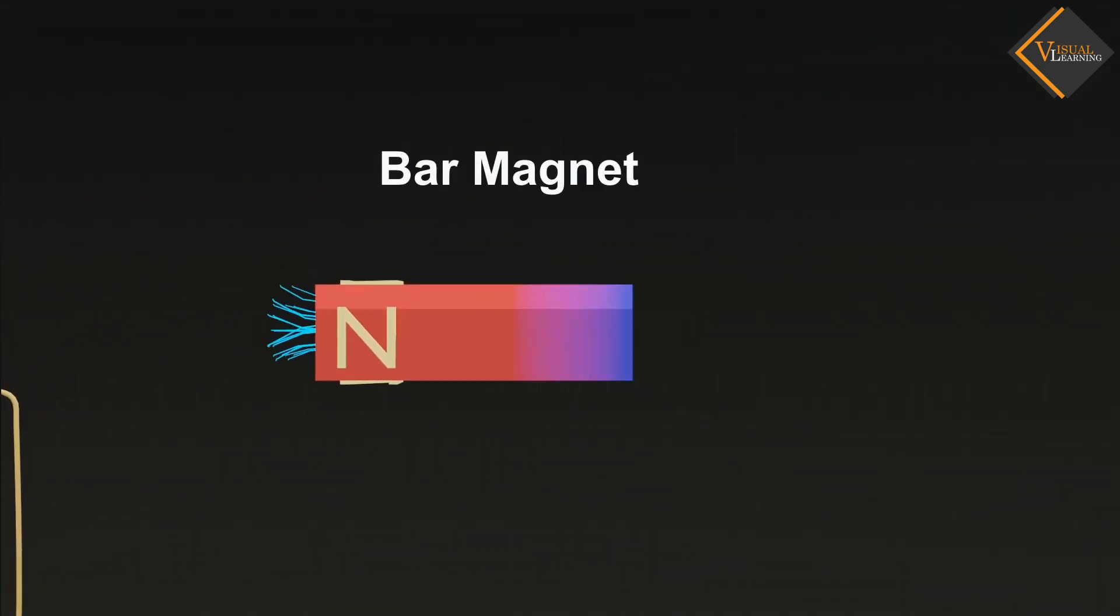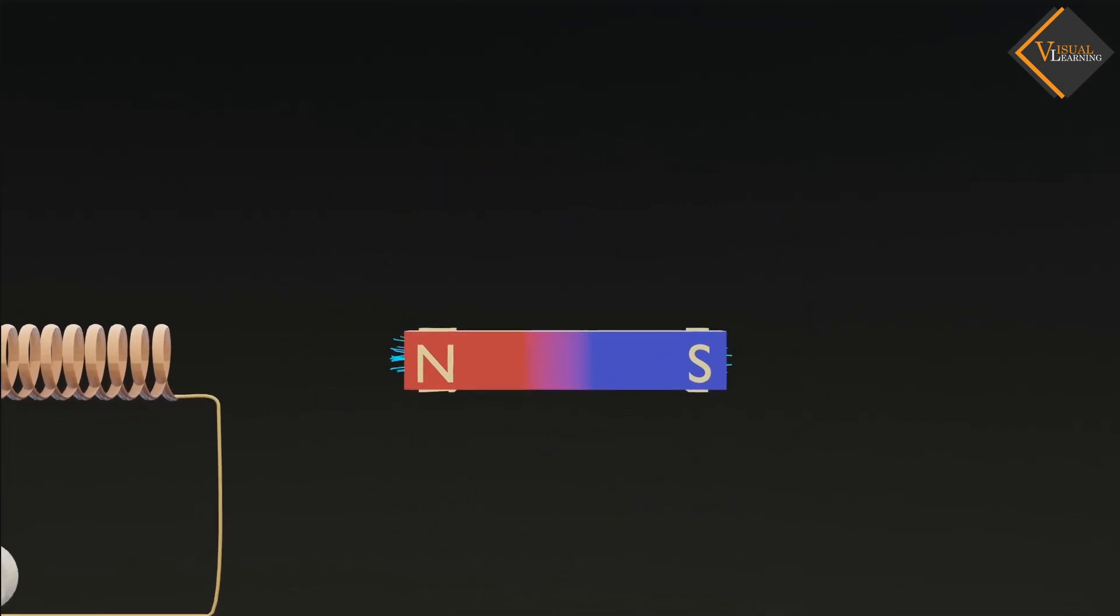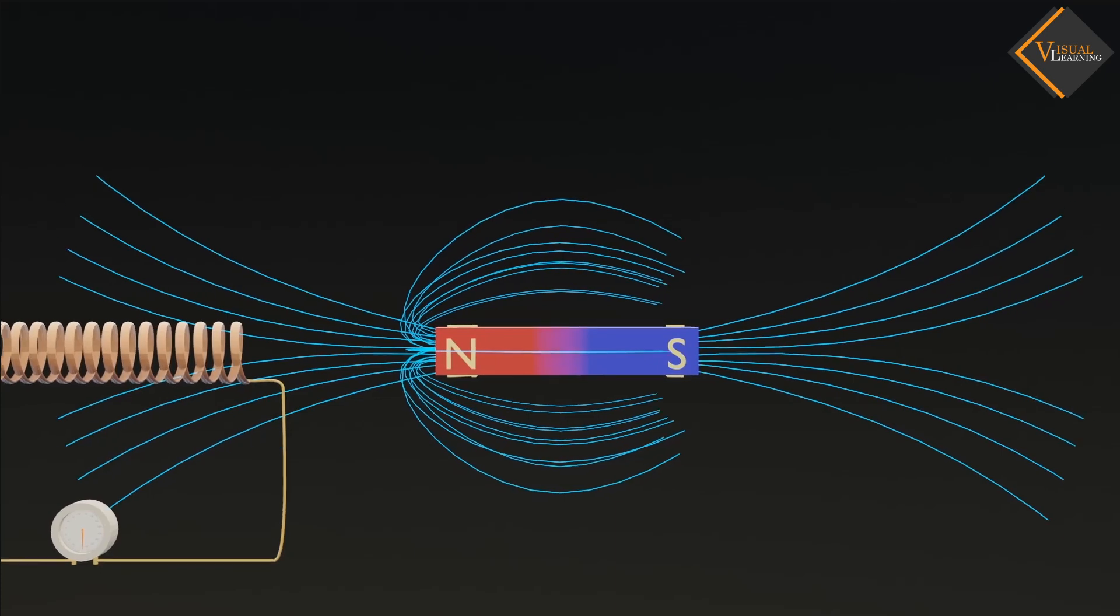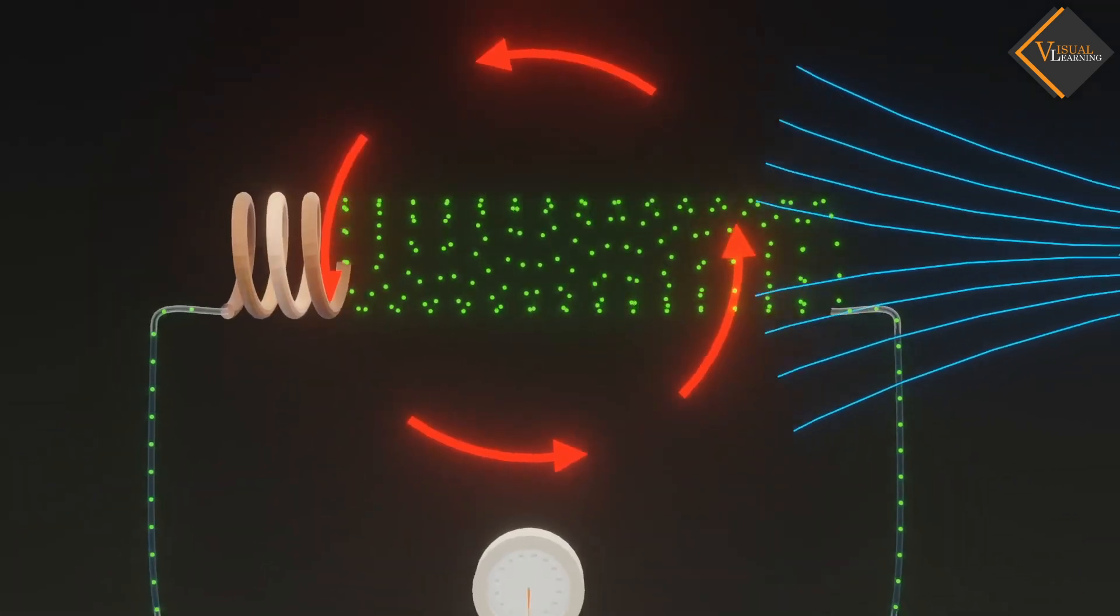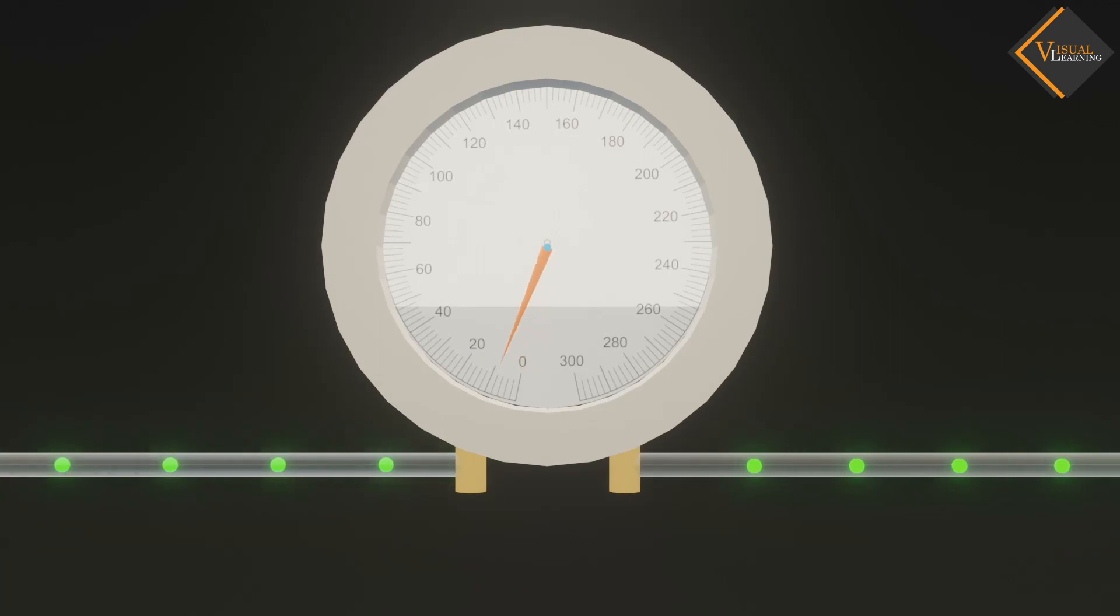A bar magnet is placed near the coil. When the bar magnet is at rest, there is no deflection shown on the ammeter. However, when the bar magnet is moved, a deflection is observed in the ammeter.